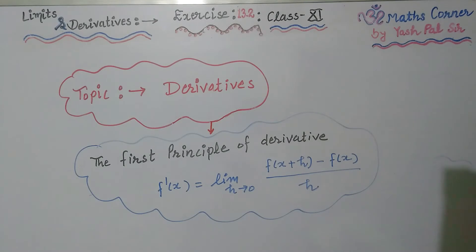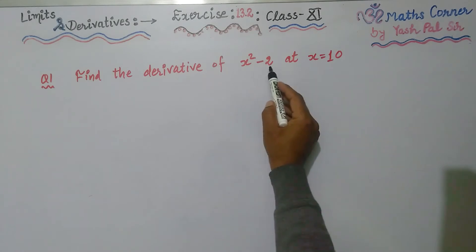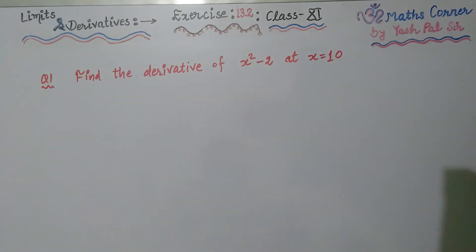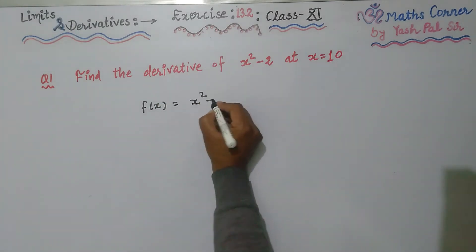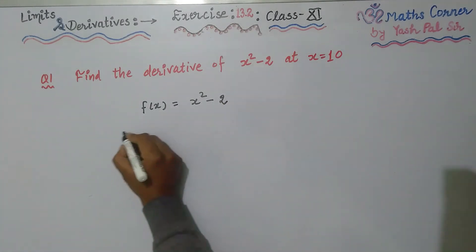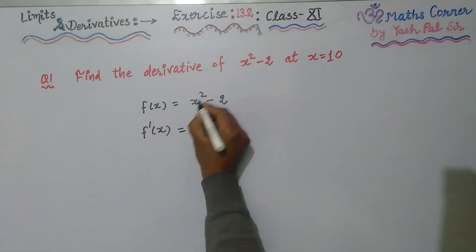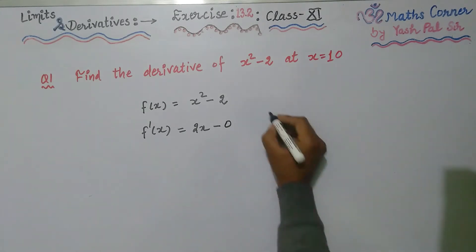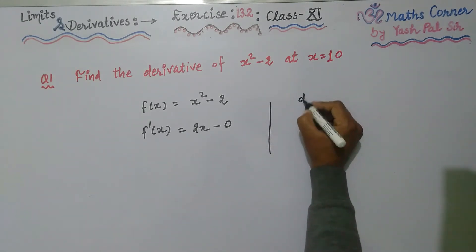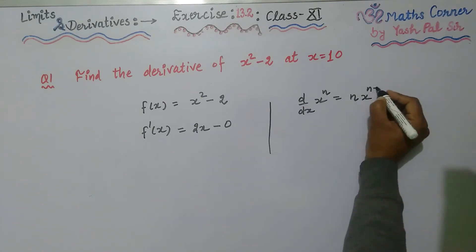Now we shall move towards the questions of Exercise 13.2. The very first question is: find the derivative of x² − 2 at x = 10. So f(x) = x² − 2. Differentiating with respect to x, f'(x) = derivative of x² is 2x, and the derivative of a constant is 0. The rule is: derivative of x^n is equal to n times x^(n−1).